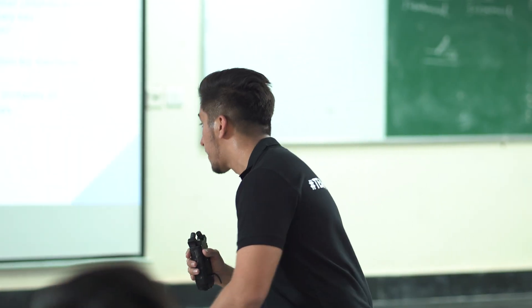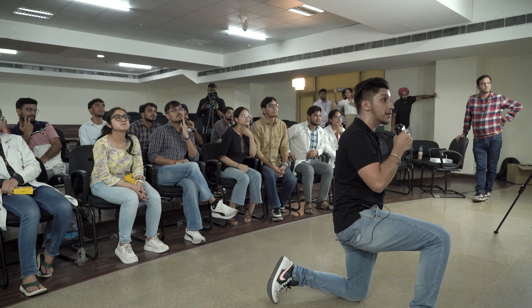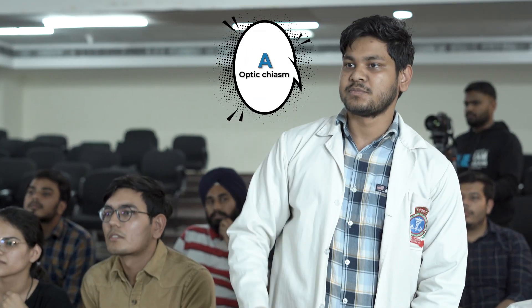Next question: a 35-year-old patient presents with decreased vision in the right eye. On examination, the right eye has an efferent pupil defect, and fundus examination reveals optic disc pallor in the right eye. Which structure in the optic pathway is most likely affected in this patient's right eye, leading to the observed clinical findings? Please congratulate and clap, guys.